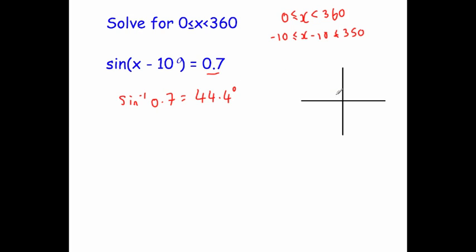Next let's put it onto our CAST diagram. Let's label it C, A, S, T and let's put in our angles. We're going to be putting in 44.4, so that means that this angle here will be 44.4, this angle here will be 44.4, this angle here will be 44.4, and this angle here will be 44.4.